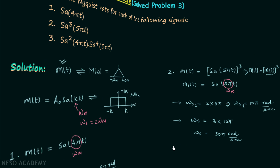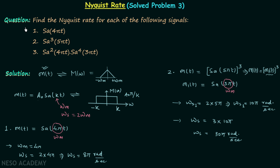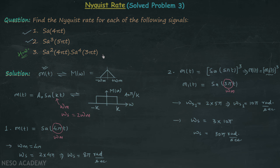We have now calculated the Nyquist rate of the first and second signals. The calculation for the third signal — sinc²(4πt) multiplied by sinc⁴(3πt) — is a homework problem for you. Use the properties already given and you will be able to solve it quickly. Once you have your answer, post it in the comment section. See you in the next lecture.